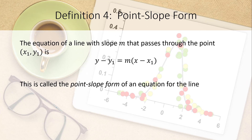The point-slope form gives the equation of a line with slope m passing through a specific point (x1, y1): y minus y1 equals m times the quantity x minus x1. This is called the point-slope form.